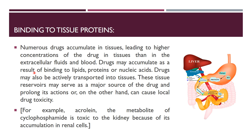Binding to tissue proteins: Numerous drugs accumulate in tissues, leading to higher concentration of the drug in tissues than in the extracellular fluids and blood. Drugs may accumulate as a result of binding to lipids, proteins, or nucleic acids, and may also be actively transported into tissues. These tissue reservoirs may serve as a major source of the drug and prolong its actions, or on the other hand, can cause local drug toxicity. For example, acrolein, the metabolite of cyclophosphamide, is toxic to the kidney because of its accumulation in renal cells.